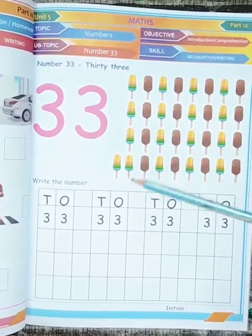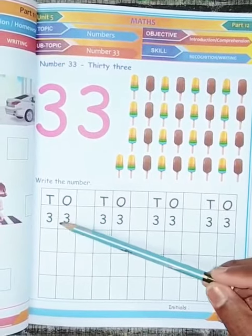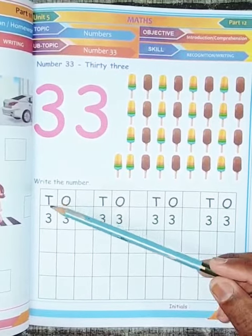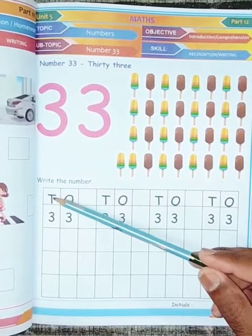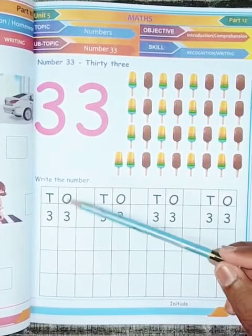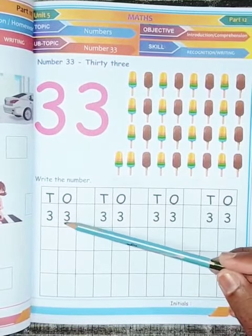So for writing number 33 in the maths notebook, you have to write 3 in the tens column and 3 in the ones column. In this way you have to write number 33.